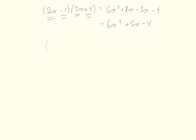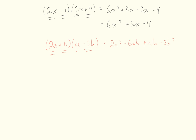You might also see binomials with a second variable, like (2a + b)(a − 3b). It's still doable following the same pattern: 2a times a is 2a squared; 2a times negative 3b is negative 6ab; b times a is ab — we always write variables in alphabetical order; b times negative 3b is negative 3b squared. Collecting the like terms negative 6ab and ab gives 2a squared minus 5ab minus 3b squared.